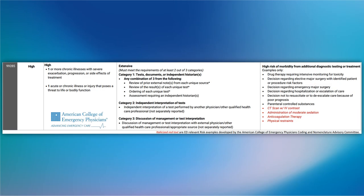Let's focus on the details involved to bill for a 99285 chart. Many times we don't document enough information to meet the criteria for a 99285 chart, which is also known as a level 5 chart. There are three columns — we'll go through them each individually. First, the COPA, or complexity of problems addressed. Then there's the data column. And finally, the risk column. I don't want to discuss the minutia of billing, but rather how to document each one of these appropriately.